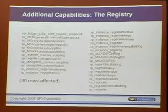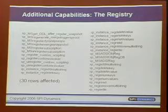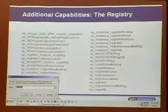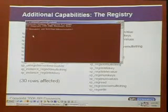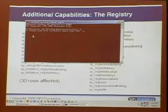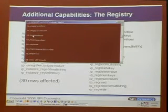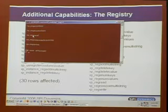You can gather sysobjects and query for name values, using wildcard operators to restrict them to certain things. For example: SELECT name FROM sysobjects WHERE name LIKE 'reg%'. The percent sign is a wildcard in SQL. Sure enough, there are 30 different stored procedures and extended stored procedures that perform registry operations.